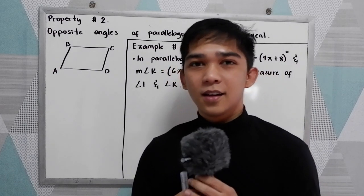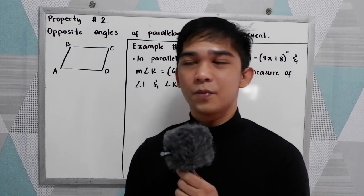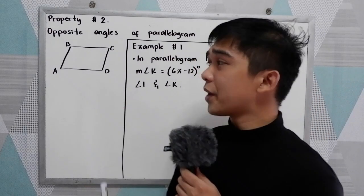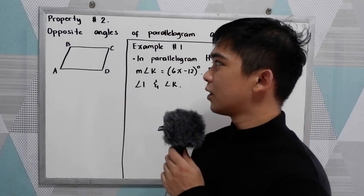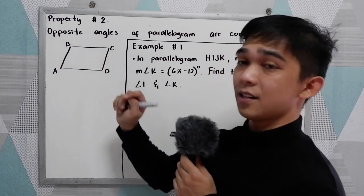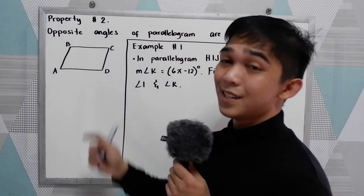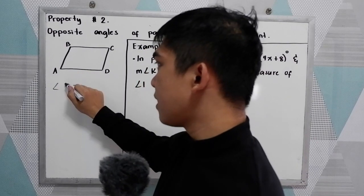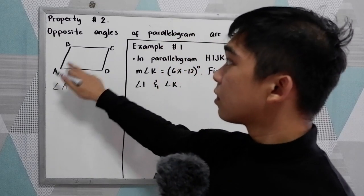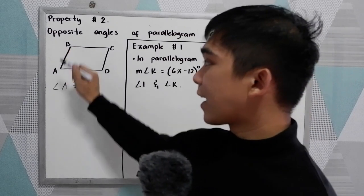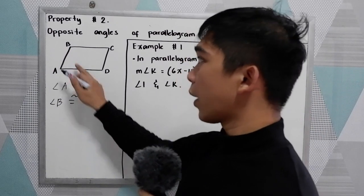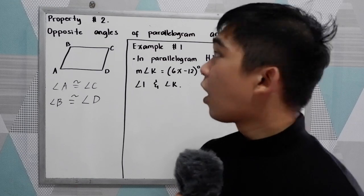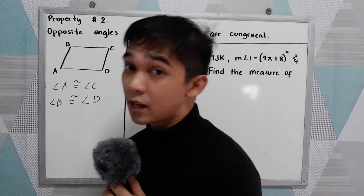Now let's have our property number 2: opposite angles of a parallelogram are congruent. To illustrate, let us use parallelogram ABCD. We know that A is opposite to C, and B is opposite to D. Therefore, angle A is congruent to angle C, and angle B is congruent to angle D. That is our property number 2 of our parallelogram — opposite angles of a parallelogram are congruent.